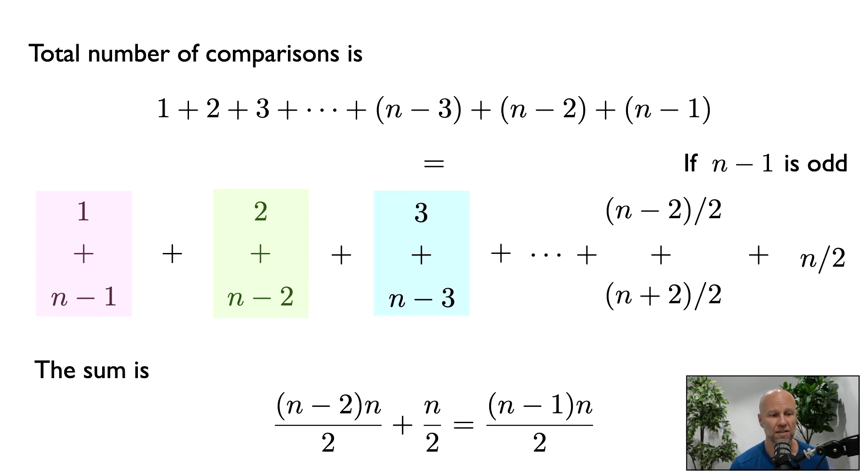So now let's do the case where n minus 1 is odd. In that case, the very number in the middle is not going to have anything to be paired up with. And the number in the middle is just going to be n over 2. So the last pair we have is n minus 2 divided by 2, which is paired up with n plus 2 divided by 2. And then we have this extra term of n over 2.